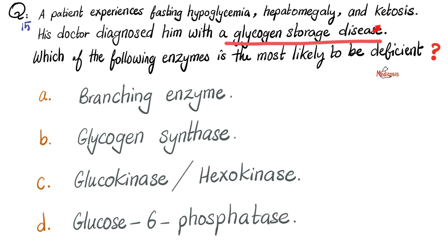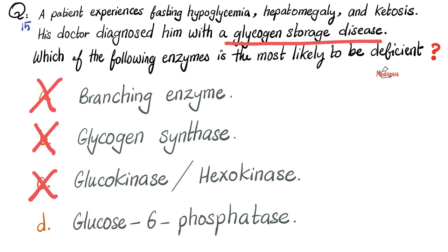What are the ketone bodies? Acetone, acetoacetic acid, and beta-hydroxybutyric acid. So this patient's problem is in breaking down glycogen. Which of the options is involved in glycogen breakdown? Branching enzyme helps build up glycogen — anabolic, not catabolic. Glycogen synthase also synthesizes glycogen. Glucokinase or hexokinase? No. Glucose-6-phosphatase? Yes — this belongs to the pathway of glycogenolysis.